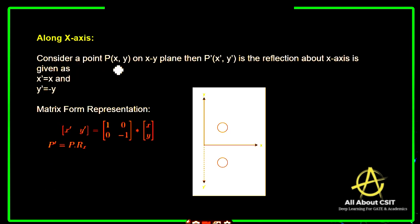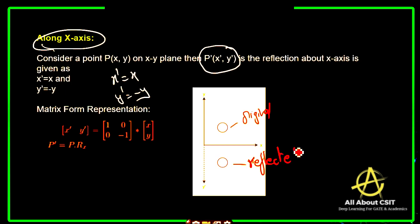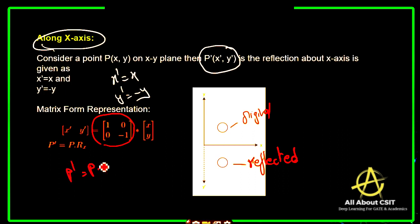Now let's look at reflection along the x-axis. Consider a point P(x, y) on the XY plane. The new point x-dash, y-dash is a reflection about the x-axis. The new x-dash remains the same, but y-dash changes to minus y. In the image, the original point reflects to the image below the x-axis. The matrix form is represented as [x-dash, y-dash] = [1, 0; 0, -1] times [x, y]. To find the new coordinates, the old coordinates are multiplied with the reflection matrix: P-dash equals P times reflection-x.